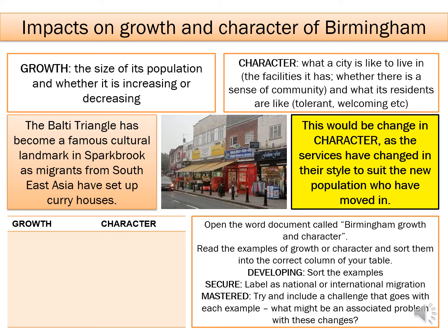Draw a quick table with two columns — growth and character — in the bottom corner, then open the Word document called Birmingham Growth and Character. Read the examples for different parts of Birmingham and sort them into the correct column based on whether they affect the size or the characteristics of the city. For the secure level, say whether it is an example of national or international migration. For grade seven and above, include a challenge with each example — for instance, the Balti Triangle is a famous cultural landmark, but the associated problem might be that more traditional older residents might not like the change in facilities. There is a word war game to check your understanding once you've completed the table.